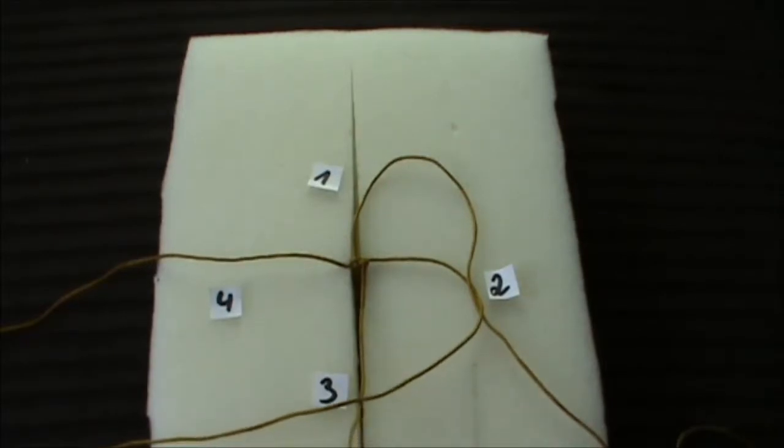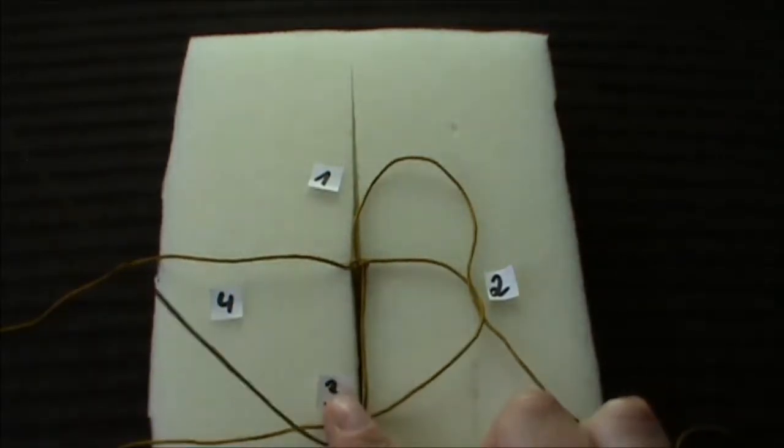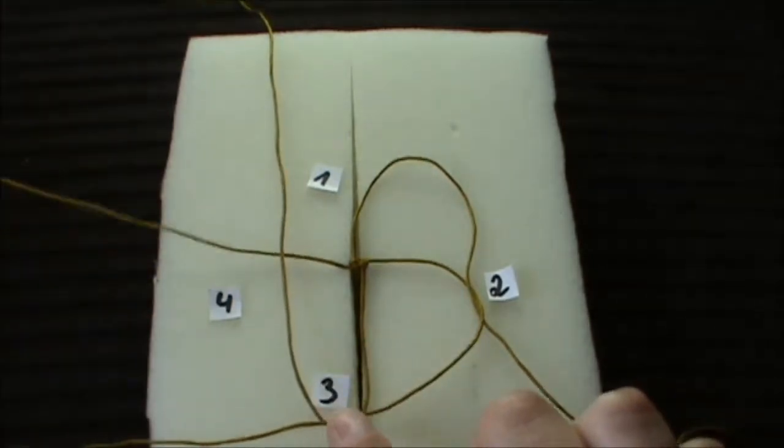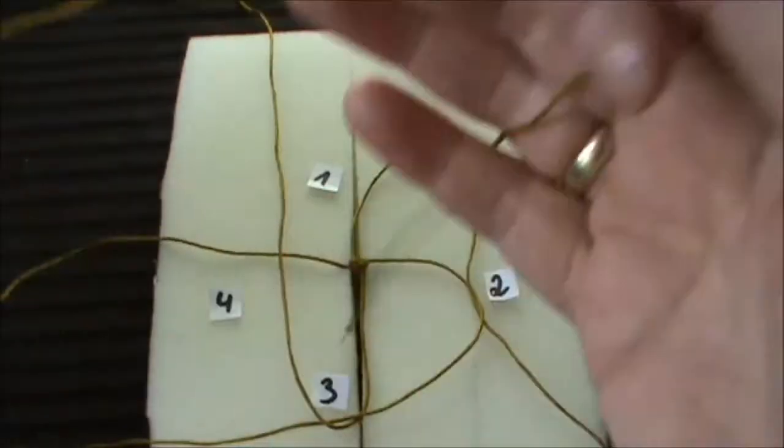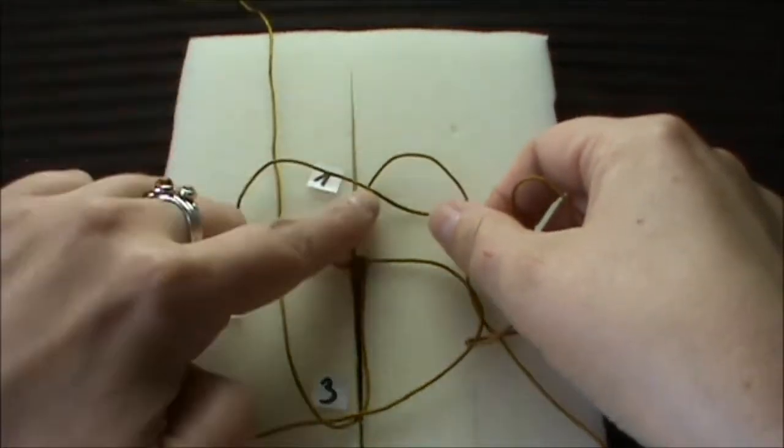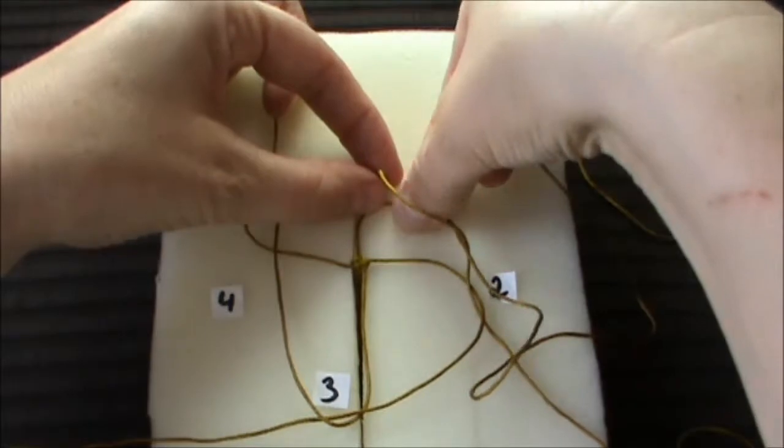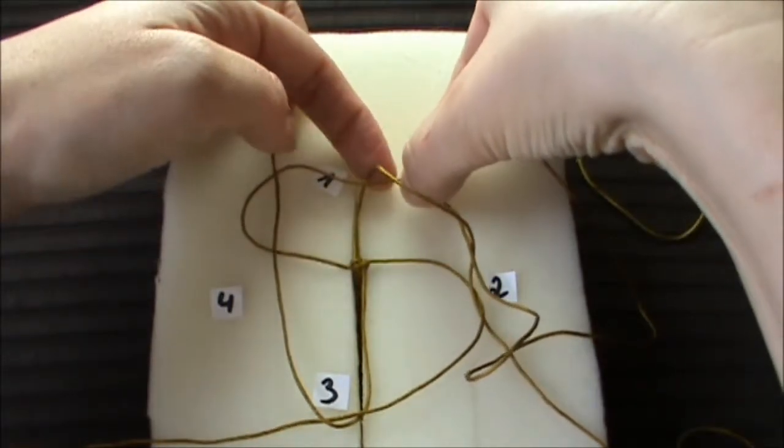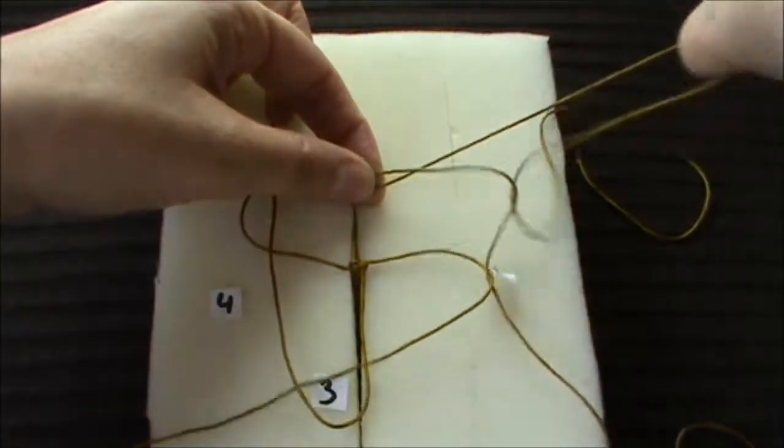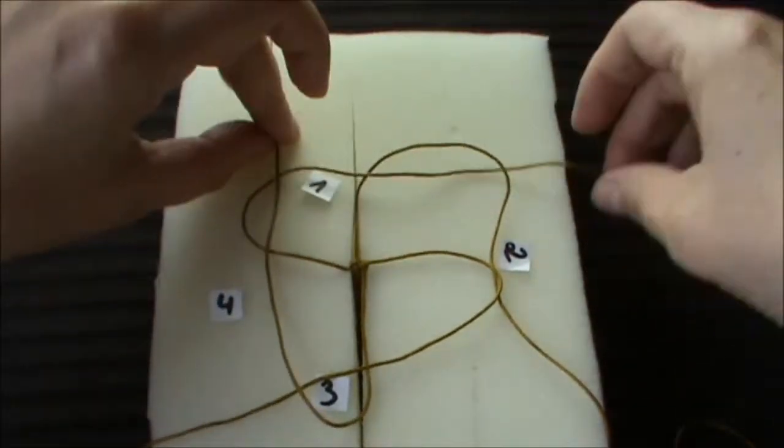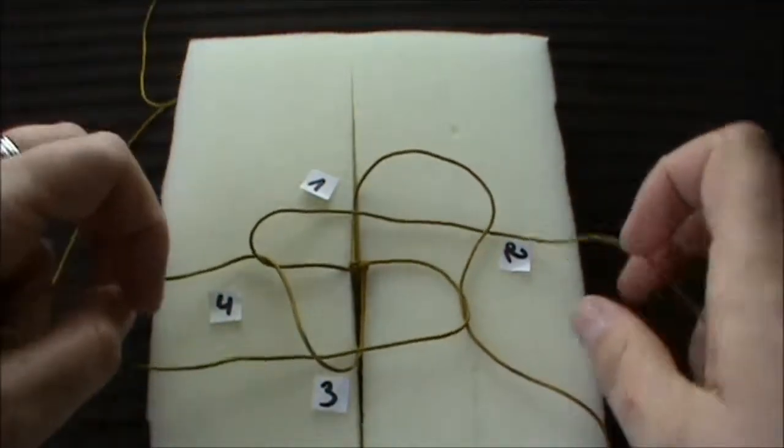Now take string three and put it over string four. And now you take string four and put it over string one and thread it through the hole, the loop of string one from top.